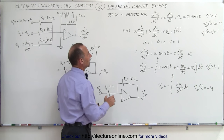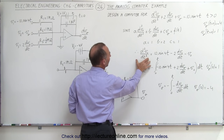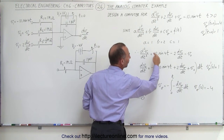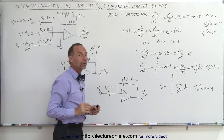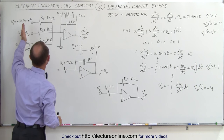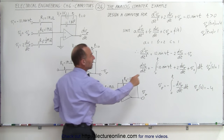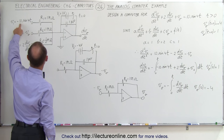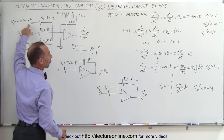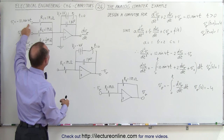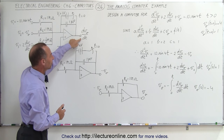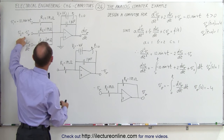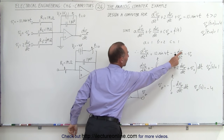If the second derivative of the output voltage equals that expression, it becomes the input to our first integrator circuit. In the first integrator, we sum three signals. The first signal is minus 10 times the sine of 4t — it's negative so that the integrator output will be positive. The second signal is the output voltage, with sign changed from minus V_o to plus V_o.